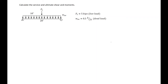In this video we're going to look at how to calculate service and ultimate shear and moments for different types of loading on a beam. We have a simply supported beam with a point load at mid-span of 5 kips, which is a live load, and then we have a 0.3 kip per foot dead load applied on the beam.